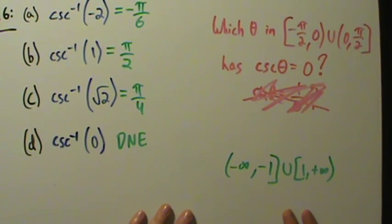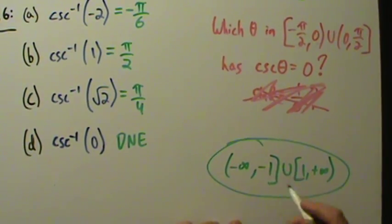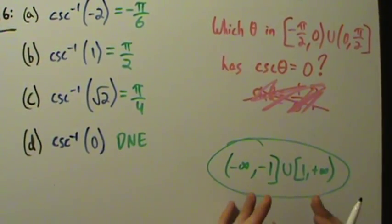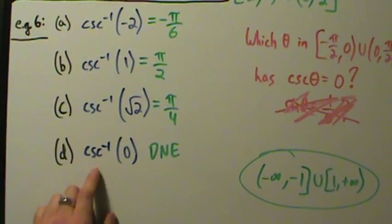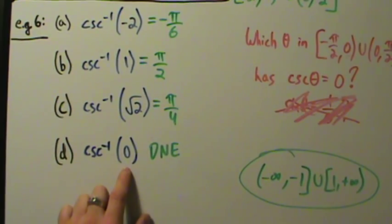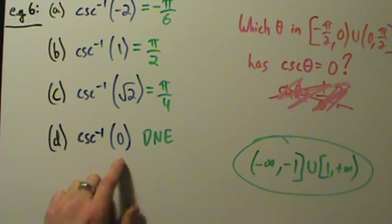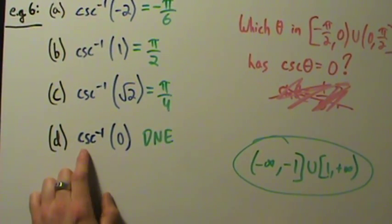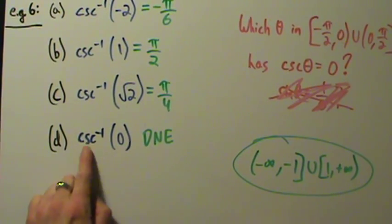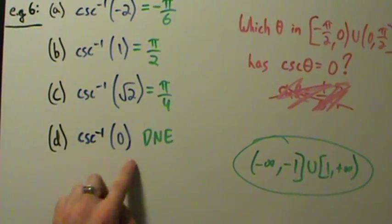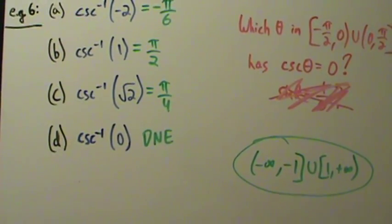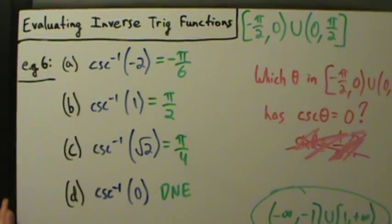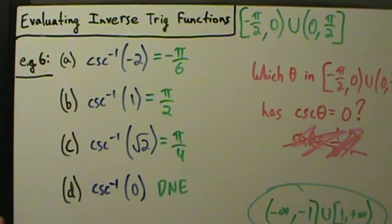A third way to think about it: since the range of cosecant is the domain of inverse cosecant, and 0 is not in that domain, we simply cannot evaluate inverse cosecant of 0. It does not exist — no solution. So that's example 6 of evaluating inverse trig functions, covering the inverse cosecant function.